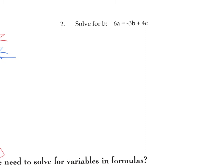Solve for B. Where is the B? The B is right here. So let's write this again. 6A equals negative 3B plus 4C. We're trying to isolate this B, which means we get rid of the other term first. So to get rid of this positive 4C, we'll subtract 4C.